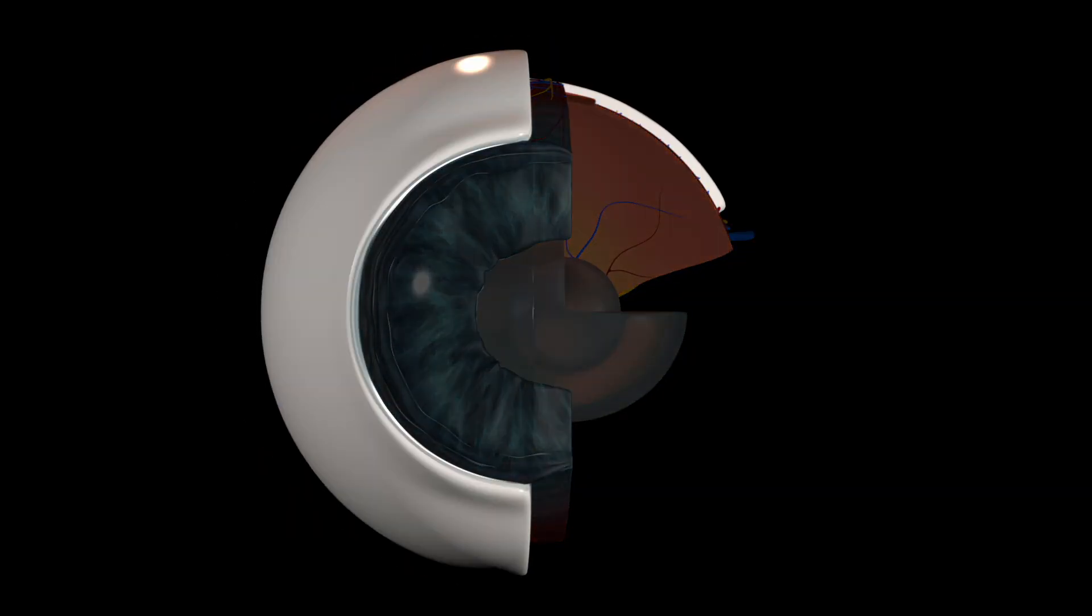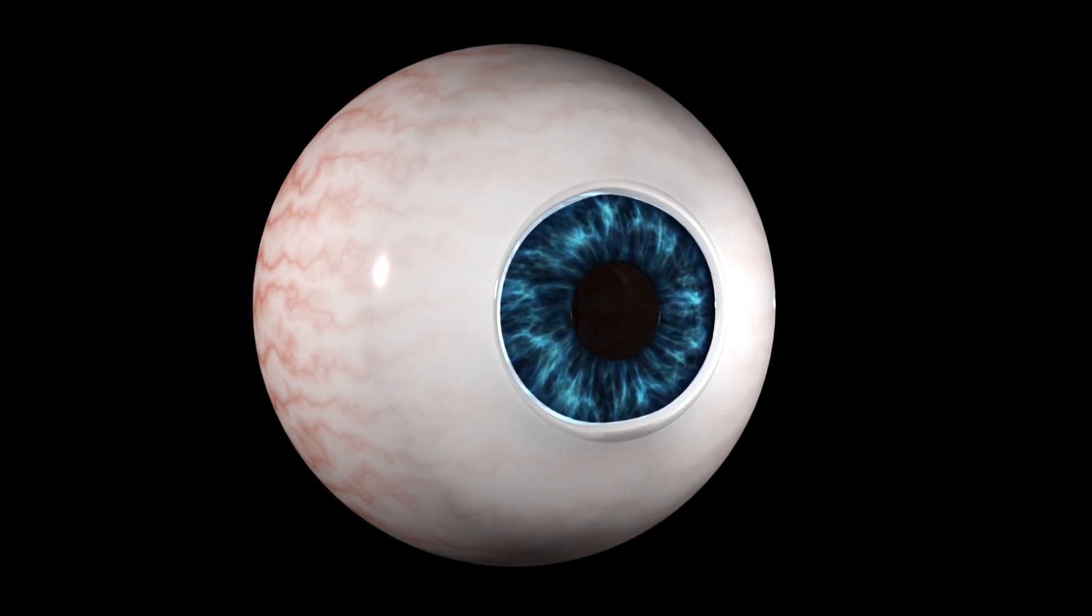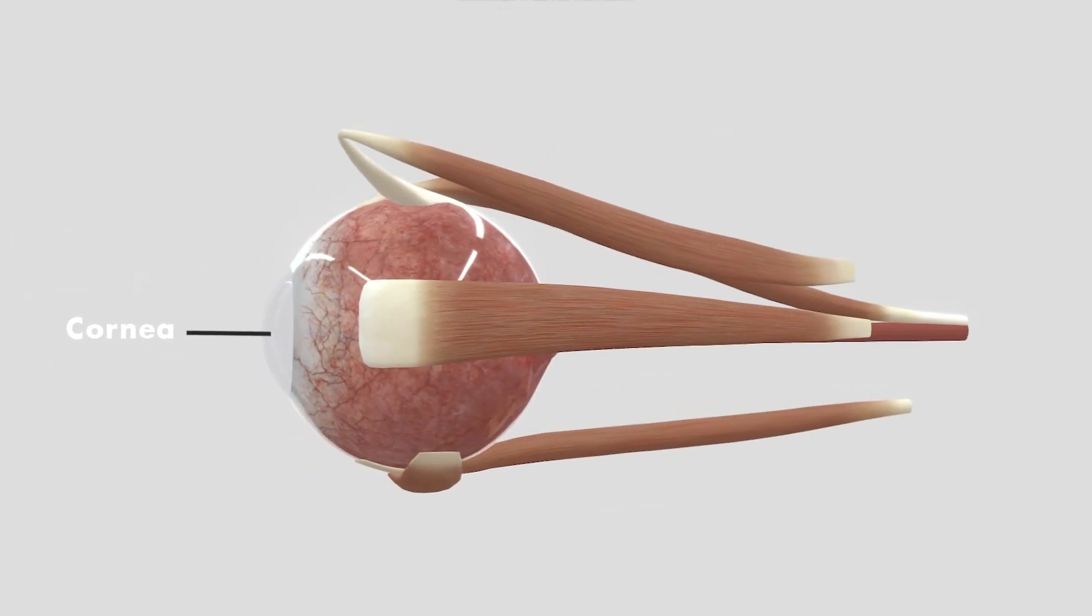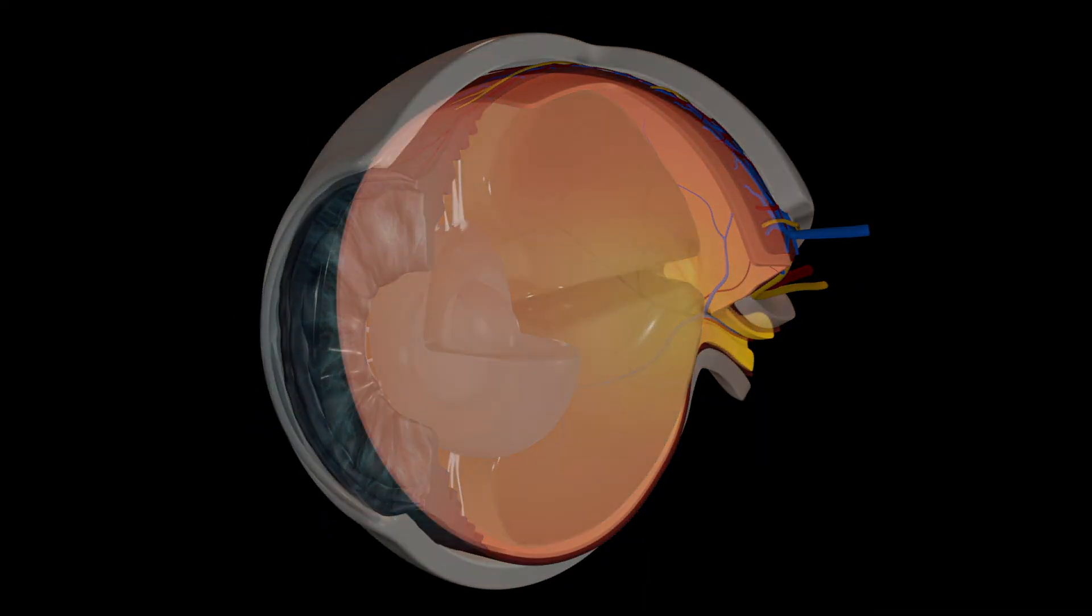The outermost layer is the fibrous layer that consists of sclera and cornea. Sclera is the white part of the eye that helps maintain the shape of the eye. Cornea is convex-shaped and helps in refraction of light rays entering the eyes.